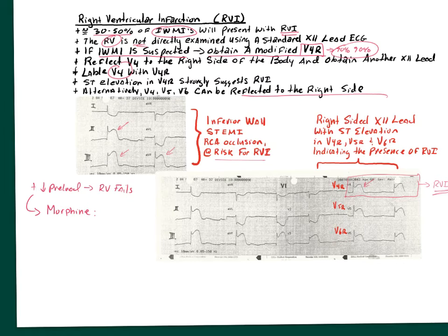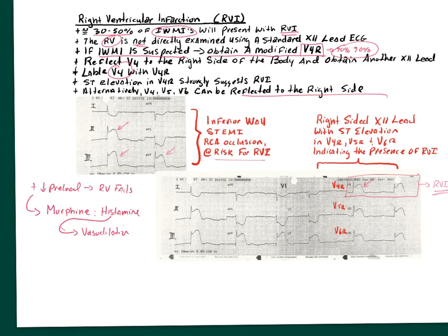Morphine causes histamine release, which causes vasodilation — similar to an allergic reaction. When you have vasodilation, particularly of the venous system, you get a decrease in preload, which can be harmful in RVI.